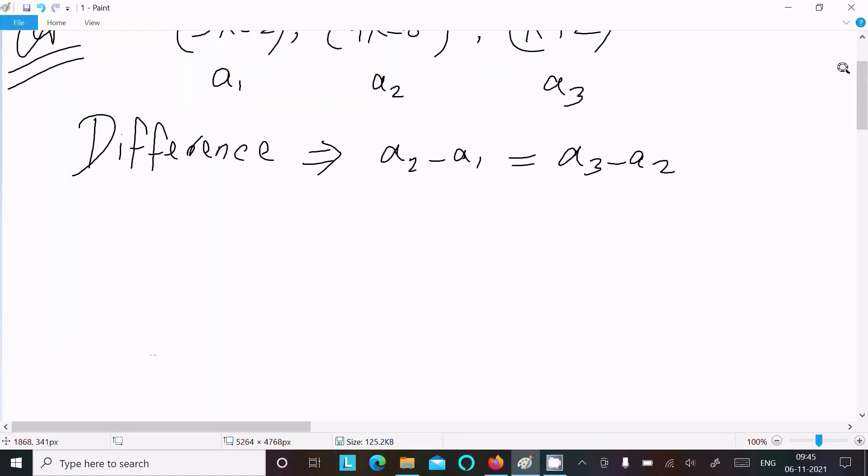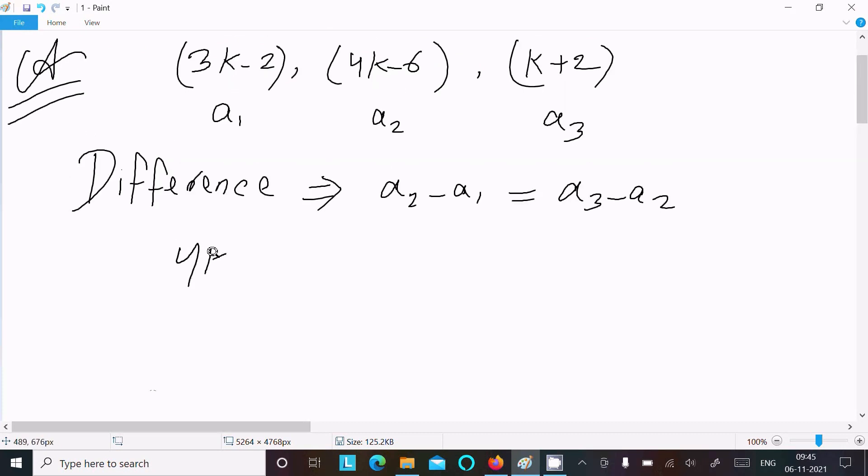Now, the second term is (4k-6) and the first term is (3k-2). Here the third term is (k+2) and the second term is (4k-6).